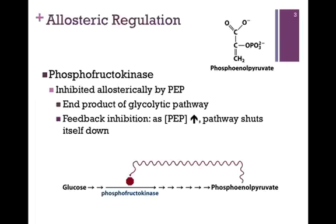Phosphofructokinase is allosterically inhibited by phosphoenolpyruvate, or PEP. The structure is shown at the top of the slide. It's not important you memorize the structure, simply that you remember its effect on the enzyme. It is one of the end products of the glycolytic pathway, as illustrated at the bottom of the slide. In glycolysis, we start with the substrate glucose, and through a series of 10 steps, we form the ultimate end product, which is pyruvate. The product of the ninth step in that pathway is PEP — not the ultimate end product, but certainly an end product of that pathway.